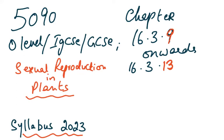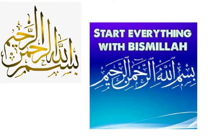Bismillahirrahmanirrahim. We start 5090 O-Level, which also covers IGCSE and GCSE. This is chapter 16.39 till 16.313 and we're going to be discussing sexual reproduction in plants - specifically seed germination and what is going to happen after fertilization. We start every session with Bismillahirrahmanirrahim because it gives you a sense of well-being when you start anything with that phrase.